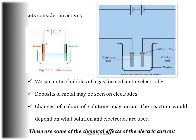These reactions depend on the solution and the electrodes used, and are some of the chemical effects of electric current. For example, when electrodes are immersed in water, oxygen bubbles are found at the positive terminal and hydrogen bubbles at the negative terminal. If a tester is attached to a potato, a green-blue color can sometimes be seen forming at the positive terminal. These are all chemical effects of electric current.